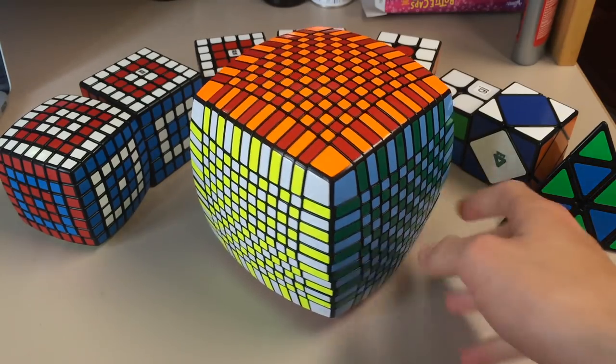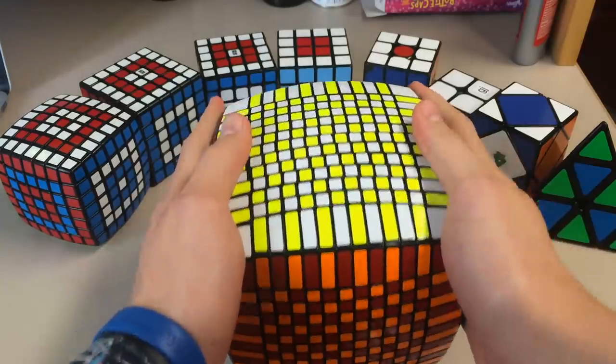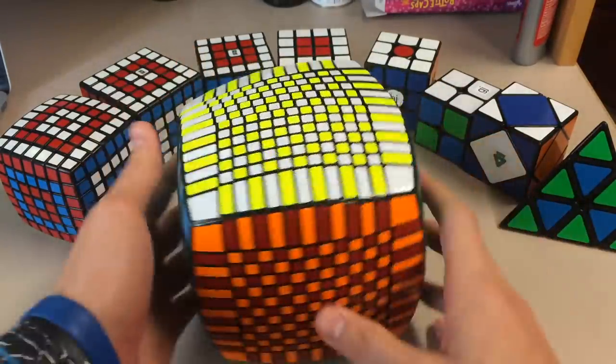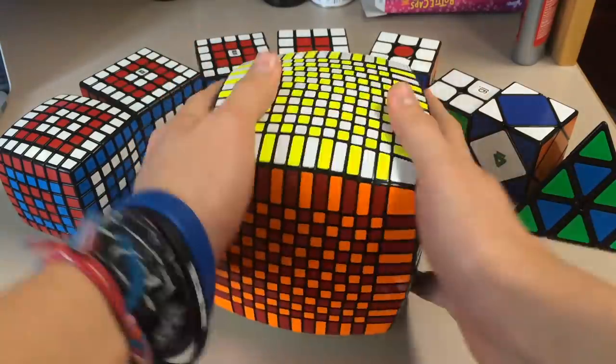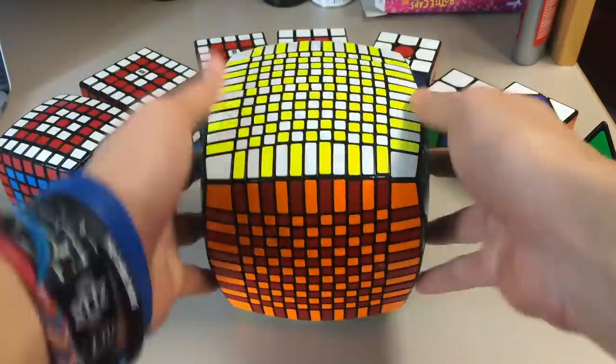So here is checkerboard on the Moyu 13x13. Looks extremely nice. There's a lot of things going on right now on this checkerboard. So next on to the flower pattern.